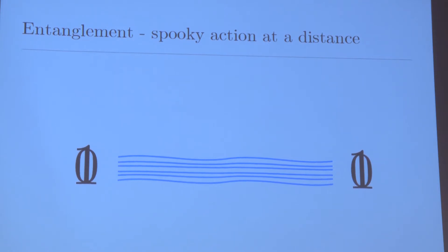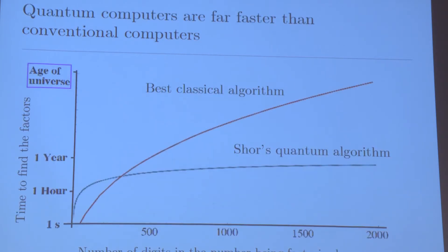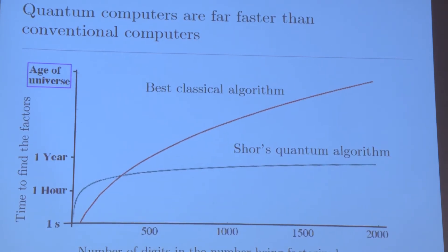The way we use that for quantum computation is that we create a large cluster of entangled qubits that form a network which we can use to perform logical operations. This is very powerful, as you can see here.